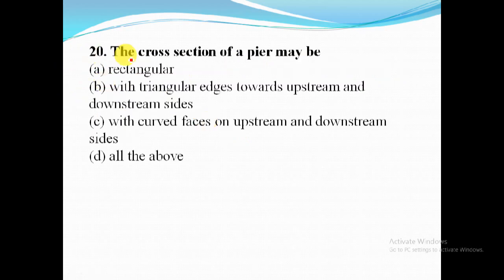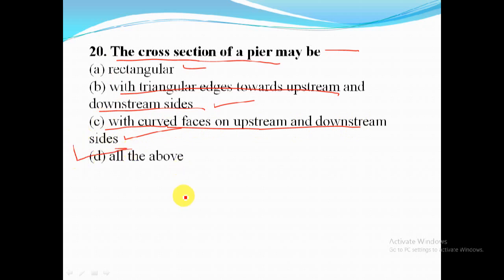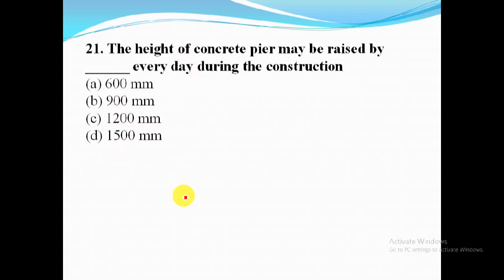The cross section of a pier may be rectangular, with triangular edges pointing upstream and downstream, or with curved faces on upstream and downstream sides. For this question, option D — all of the above — is the correct answer.